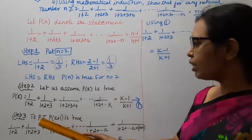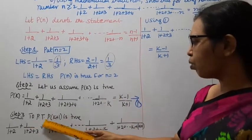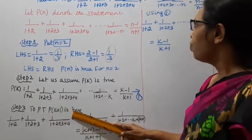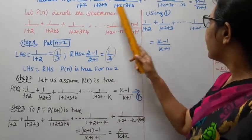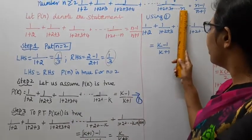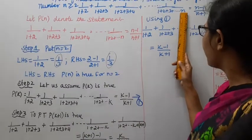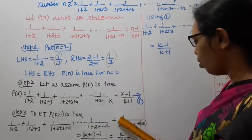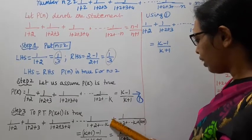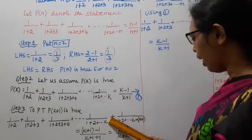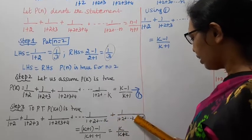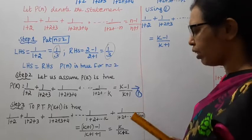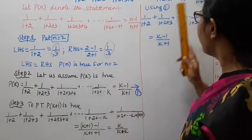Step 3: To prove that P(k+1) is true. Now, if we take k, how to process k — k is equal to k. k plus (k+1) is equal to k.